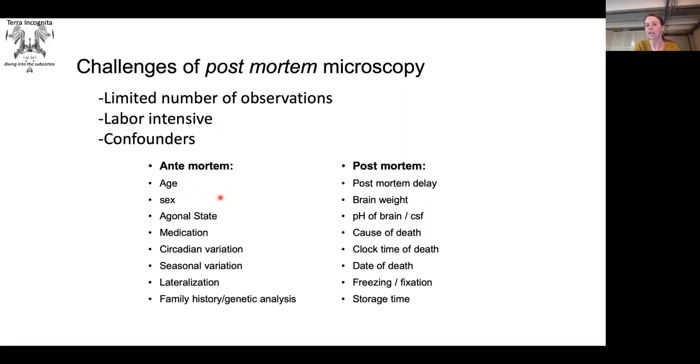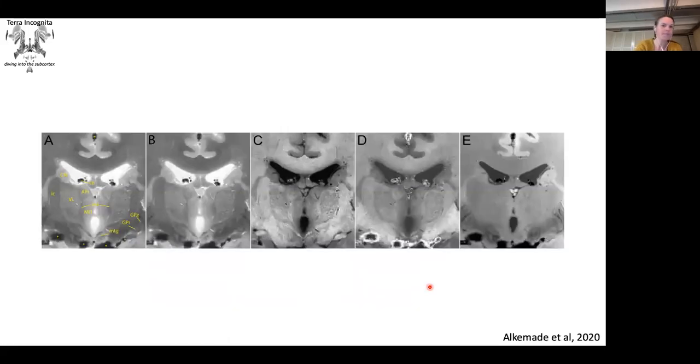These are age, sex, agonal state, the medication that these patients received before they died, factors like seasonal and circadian variation, lateralization effects. Often researchers don't have a whole brain to their research, but they have to work with parts and usually parts from one hemisphere. There can be a family history that we don't know about. And post-mortem, we have to deal with things like the time between the demise of the person and then until we can actually start fixating the brain itself. There's large variations in the brain weight, the pH of the brain changes when you die, people vary in the way they die, when they die, and how the tissue is treated.